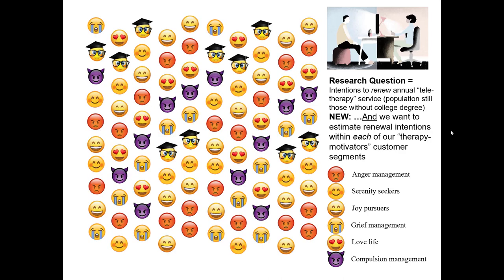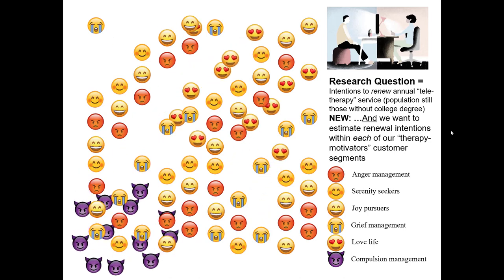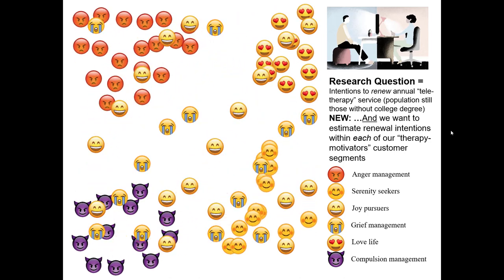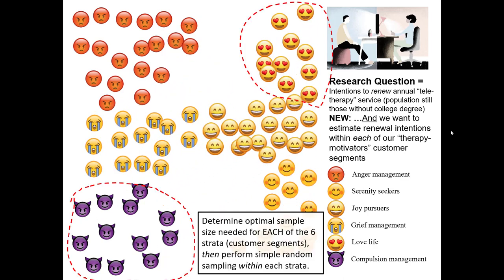Since we know these unique characteristics about each customer based on the CRM system, and our objective is to analyze the intentions to renew for each one of these segments, we first identify these individuals. Since we're using stratified sampling, we organize the individuals — normally done with a simple Excel sheet or whatever software tool allows us to organize the groups. Within each one of these six strata, or customer segments, we then perform simple random sampling within each of the groups. And that completes stratified sampling.